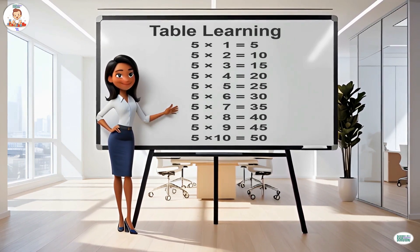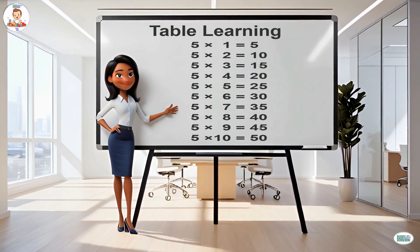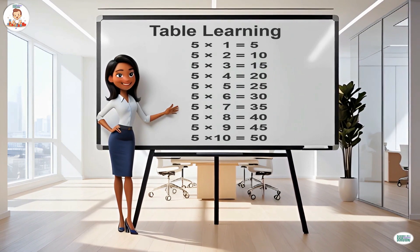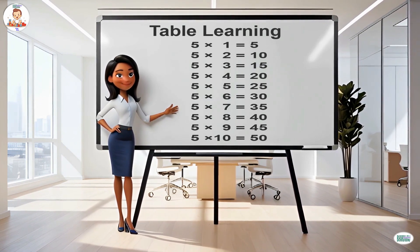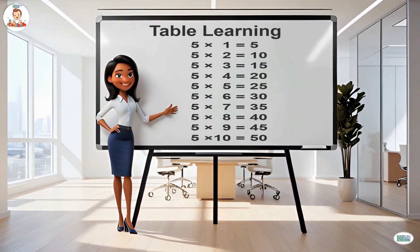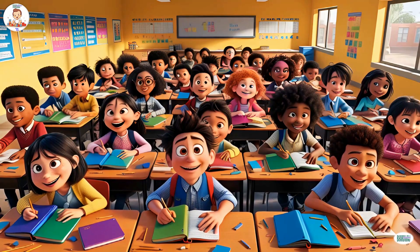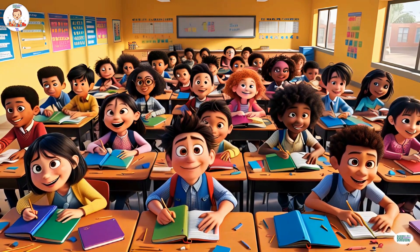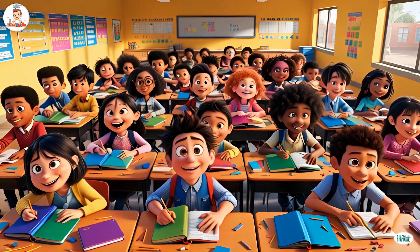Five nines are forty-five, five tens are fifty. Finally, we have completed the journey of tables! Now repeat after me and learn again. Are you ready? Yes! Let's get started. Two ones are two, two twos are four.